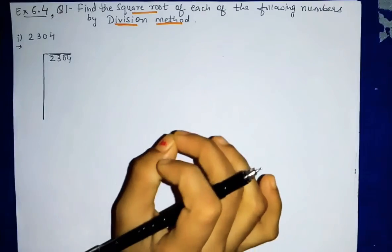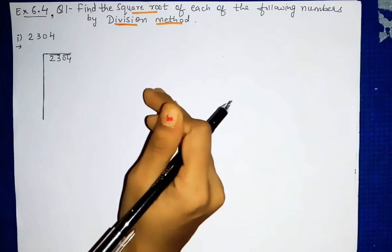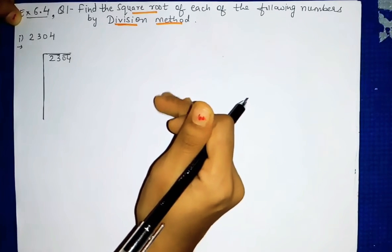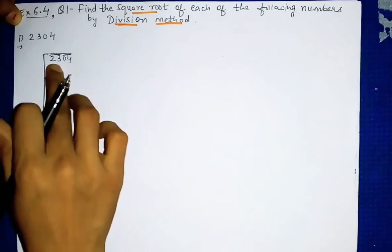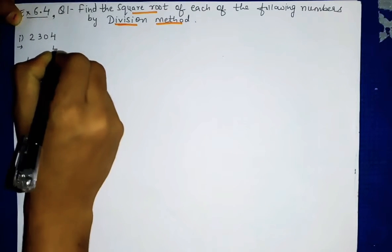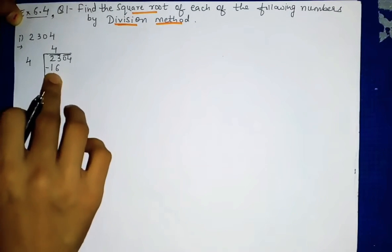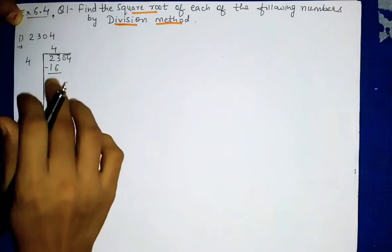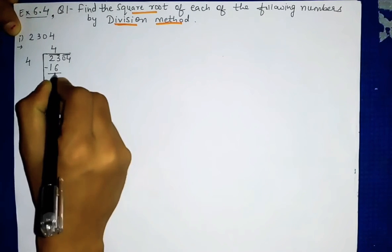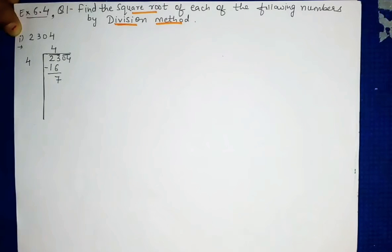We need a perfect square less than or equal to 23. Let us check: 2×2=4, 3×3=9, 4×4=16, 5×5=25. Now 25 is a perfect square but 25 is greater than 23, so we can't take it. We take 4×4=16. So we subtract: 23 minus 16. 23 minus 16 gives us 7.